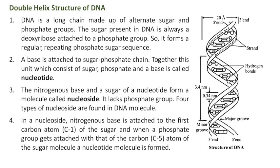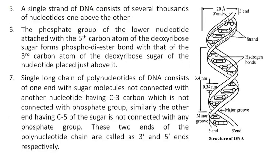Four types of nucleoside are found in the DNA molecule. In a nucleoside, the nitrogenous base is attached to the first carbon atom, C1, of the sugar, and when a phosphate group gets attached to the C5 carbon atom of the sugar molecule, a nucleotide molecule is formed. A single strand of DNA consists of several thousands of nucleotides. The phosphate group of the lower nucleotide attached with the fifth carbon atom of the deoxyribose sugar forms a phosphodiester bond with that of the third carbon atom of the deoxyribose sugar of the nucleotide placed just above it.